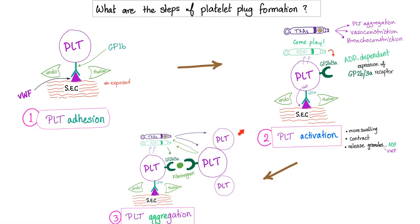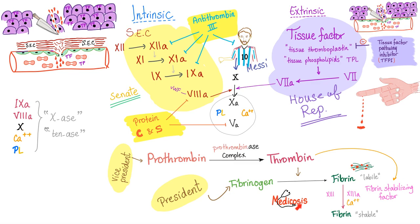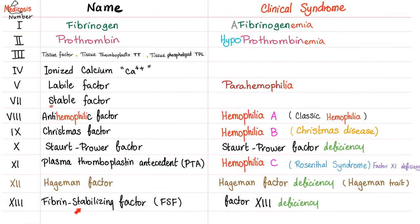Factor 13 deficiency does not involve primary hemostasis. It is absolutely concerned with secondary hemostasis — Factor 13 stabilizes fibrin into stable fibrin fibers through a process called cross-linking. We need Factor 13 activated by ionized calcium for this step. That is why Factor 13 is called the fibrin stabilizing factor. Factor 13 deficiency is an autosomal recessive disease.